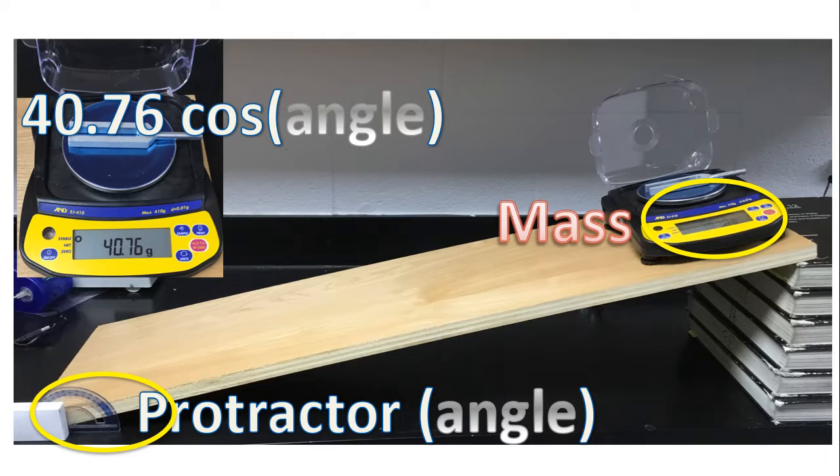And we're going to take the original mass, which is 40.76. We'll never change that number. And multiply it by cosine of the angle that we measure with the protractor. And we'll see what happens.